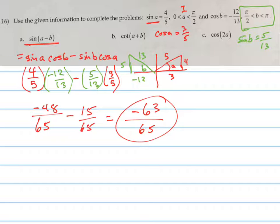So that equals negative 63 over 65. And that is your answer. That's the sine of A minus B. Whatever A is and whatever B is, the sine of that is going to be negative 63 over 65.